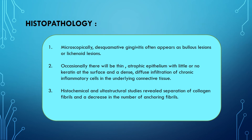In histopathology, microscopically, desquamative gingivitis often appears as bullous lesions or lichenoid lesions. Occasionally, there will be a thin atrophic epithelium with little or no keratin at the surface, and diffuse infiltration of chronic inflammatory cells in the underlying connective tissue. Histochemical and ultrastructural studies reveal separation of collagen fibres and a decrease in the number of anchoring fibres.